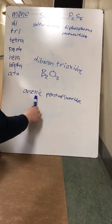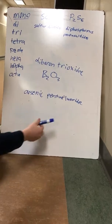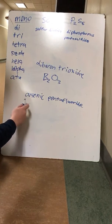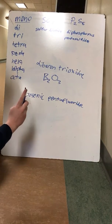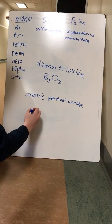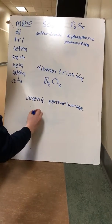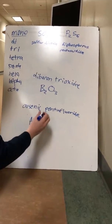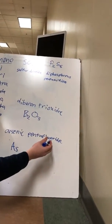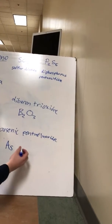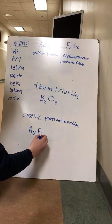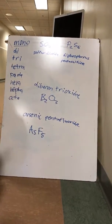We have arsenic pentafluoride, and since there's no prefix on arsenic, we know there has to be only one arsenic, so As, and then five fluorine atoms, so AsF₅.